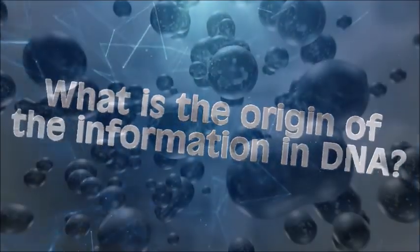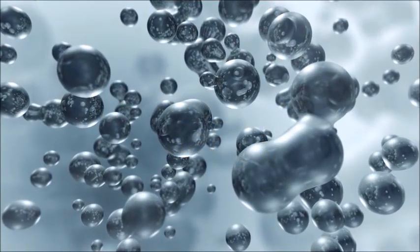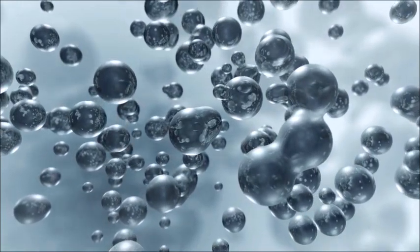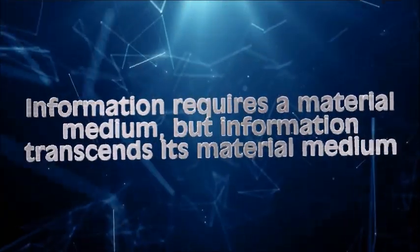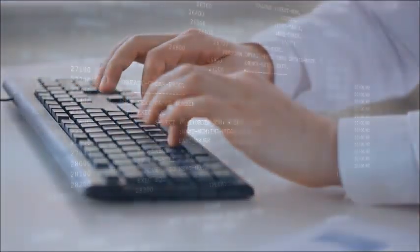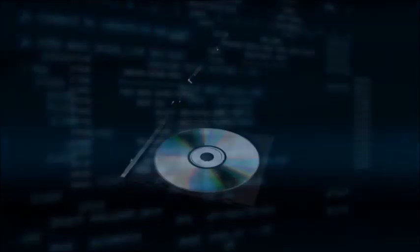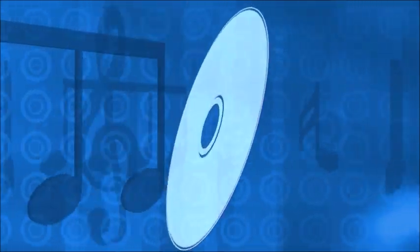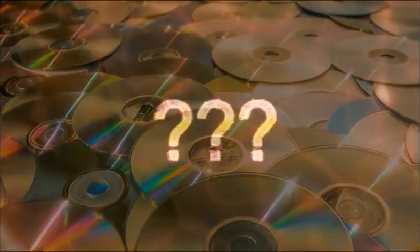The fact that life is based on information is a major difficulty for all materialistic accounts of life because information is immaterial. Although information does require a material medium, it transcends its material medium. Since the same information can be transmitted through a variety of physical mediums, information is clearly not reducible to matter. Consider the example of a disk. A blank disk weighs just as much as one containing sophisticated software, yet the blank disk gives no function and the disk containing software does because of the digital information written by a programmer. But since there is no material difference between either disk, the information is not reducible to the matter comprising the disk.